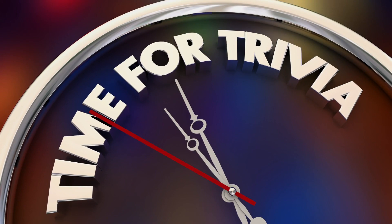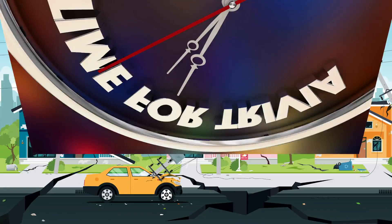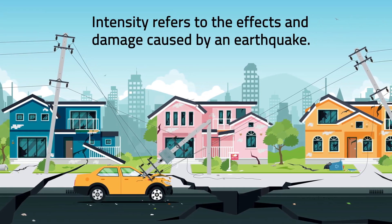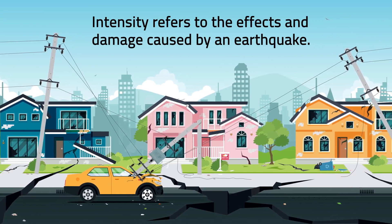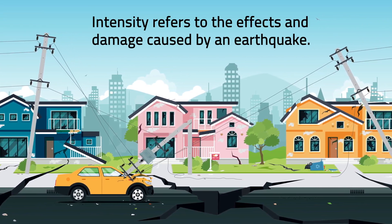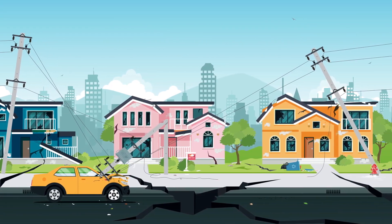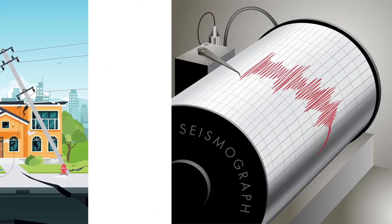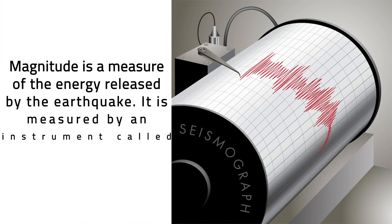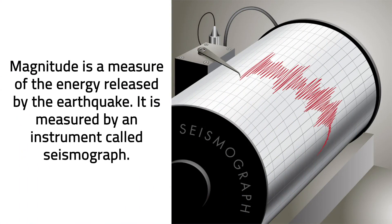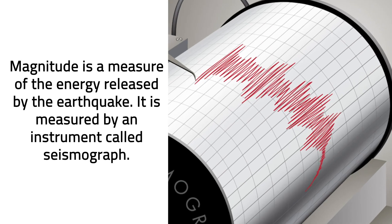Trivia time! Intensity refers to the effects and damage caused by an earthquake. It is determined by actual observation or on-site inspection of the affected areas, including interviews with the people. On the other hand, magnitude is a measure of the energy released by the earthquake, measured by an instrument called a seismograph. The seismograph records the shaking of the ground as wavy lines on paper.